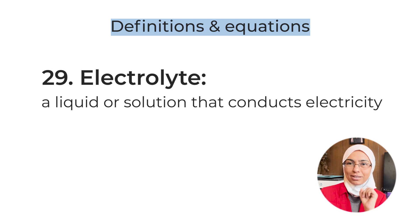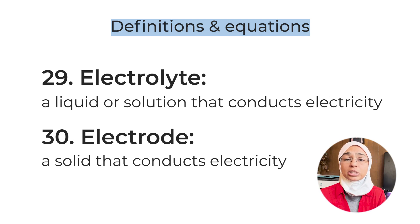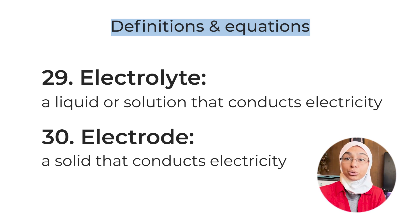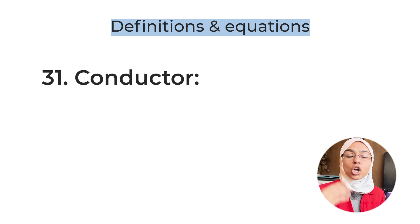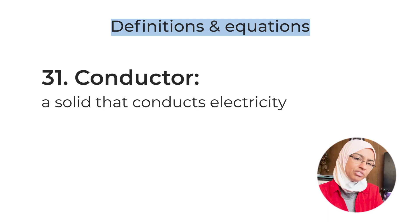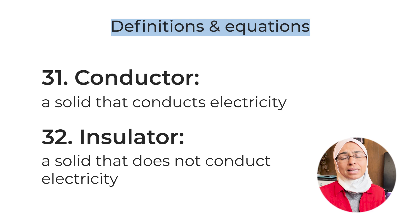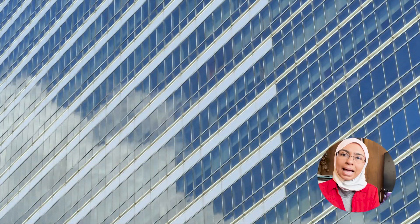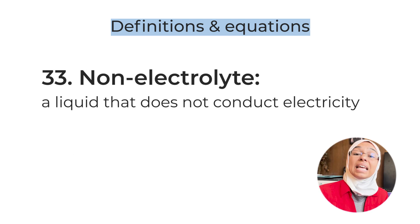Definition number thirty: electrode — a solid that conducts electricity, immersed into an electrolyte. You may need to label an electrode, or identify which is the cathode and which is the anode. Definition number thirty-one: conductor — a solid that conducts electricity. Definition number thirty-two: insulator — a solid that does not conduct electricity. Examples include plastic, wood, glass, and rubber — mainly non-metals.